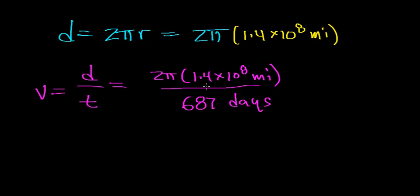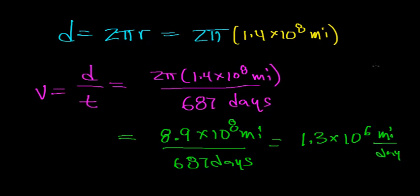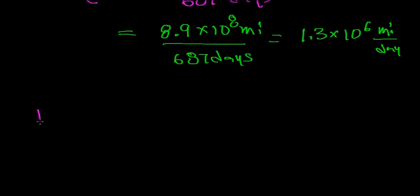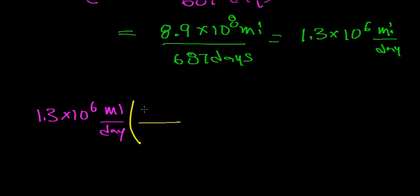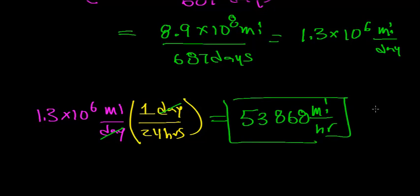When we multiply 2π × 1.4 × 10⁸ miles, we get 8.9 × 10⁸ miles, and dividing by 687 days gives about 1.3 × 10⁶ miles per day. To convert to miles per hour, we multiply by the factor that 1 day has 24 hours — the 'day' units cancel — giving 1.3 × 10⁶ divided by 24, which works out to about 53,868 miles per hour. So the average orbital velocity of Mars is approximately 53,868 miles per hour.